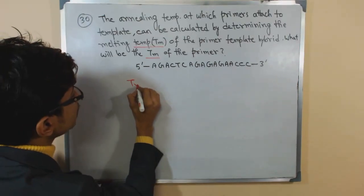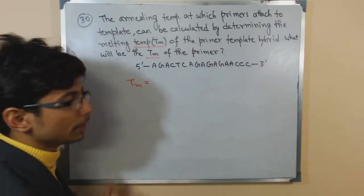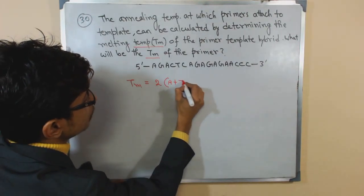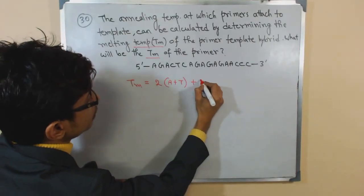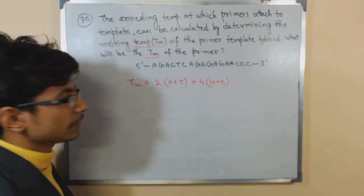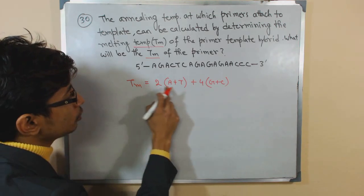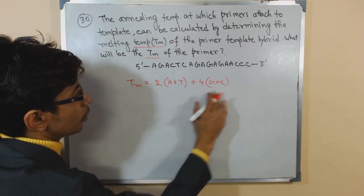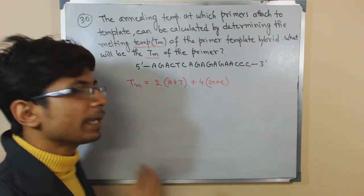The formula for calculating the melting temperature: Tm equals 2 into (A+T) plus 4 into (G+C). That is the formula: 2 multiplied by A plus T, plus 4 multiplied by G plus C.